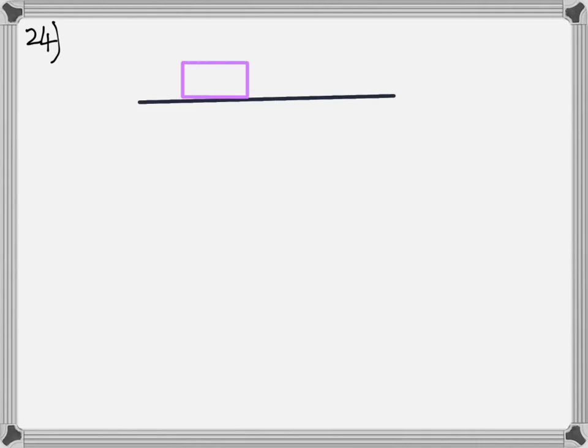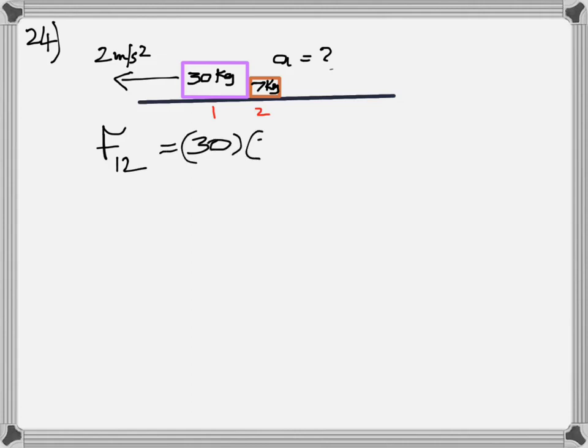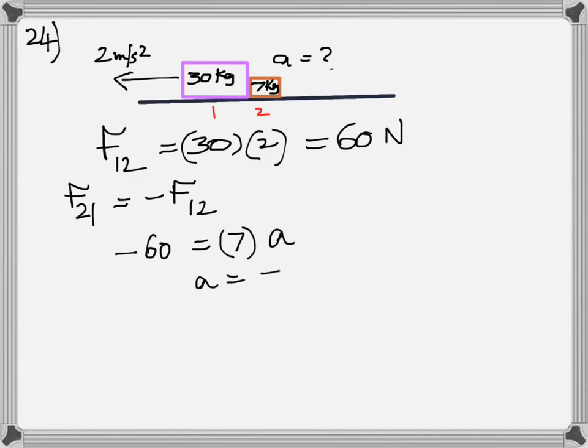Number 24. Two objects push on each other, 30 kg and 7 kg. The first one is accelerating at 2 m per second squared. F1,2 is force on 1 due to 2, mass times acceleration, so that's 60 N. If 2 is applying a force of 60 N on 1, according to Newton's third law, the other one must apply an equal and opposite force. So it should be negative 60 N. Negative 60 equals mass of the other one, 7 times A. So A is negative 60 by 7. That negative shows it's going in the opposite direction. If the first one was going east, this is going west.